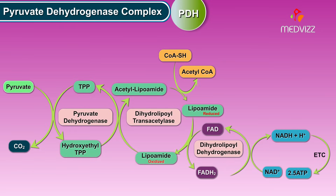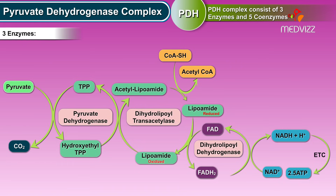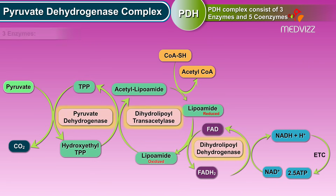The PDH complex consists of 3 enzymes and 5 coenzymes. The 3 enzymes are: pyruvate dehydrogenase with TPP as a coenzyme, dihydrolipoyl transacetylase, and dihydrolipoyl dehydrogenase.